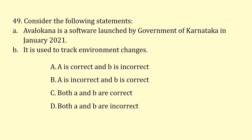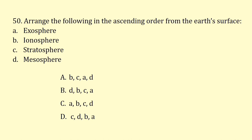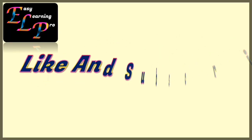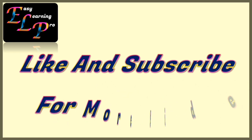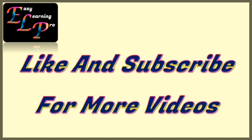Consider the following statements. Avalokana is a software launched by the Government of Karnataka in January 2021 — this is correct. It is used to track environment changes — this statement is wrong. So the correct answer is option E. Arrange the following layers in ascending order from the Earth's surface: Stratosphere, Mesosphere, Ionosphere, then Exosphere. The answer is option D.